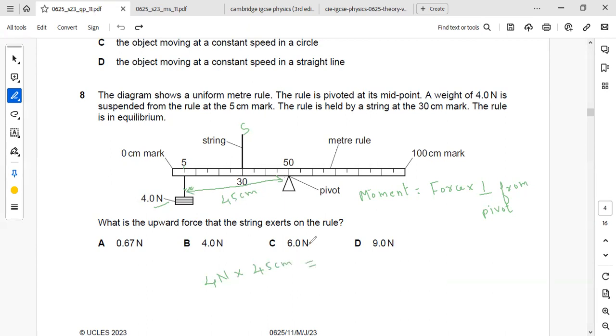This will be equal to anti-clockwise moments. That is the string. We need to find the upward force that the string exerts on the rule, so I will write it as S. And the perpendicular distance from the string to pivot, that is 50 minus 30, 20. So S will be equal to 4 Newton into 45 centimeter divided by 20 centimeter. Centimeter will get cancelled.